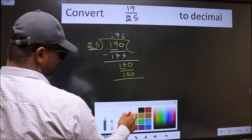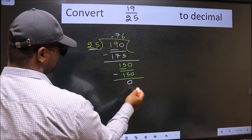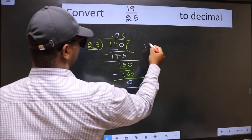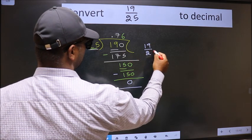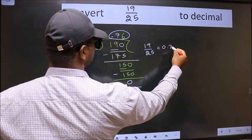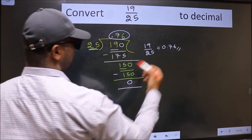Now we should subtract. We got 0. Therefore, the decimal of 19 by 25 is this one: 0.76 is our answer.